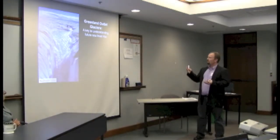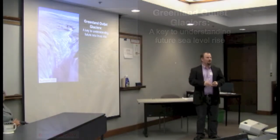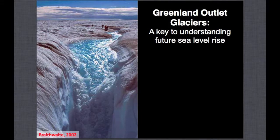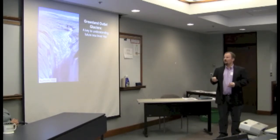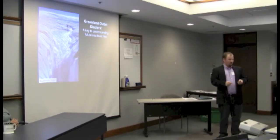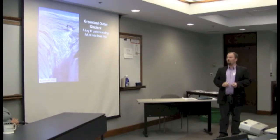Understanding future sea level rise really hinges on understanding ice sheets, particularly Greenland. This is a famous photo now about 10 years old, taken on the Greenland ice sheet. This is meltwater going down a moulin, which is a channel that reaches the bottom of an ice sheet and can actually speed up the flow of the ice sheet, causing the outlet glaciers to flow faster. For now, we'll just note that this adds water to the ocean.